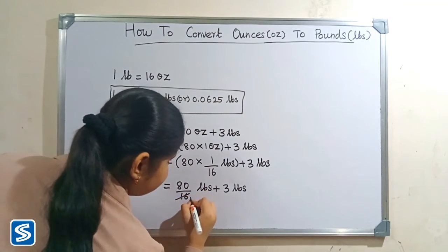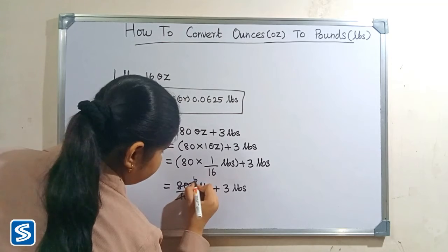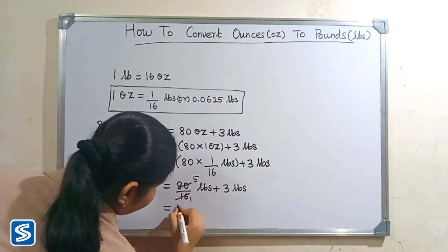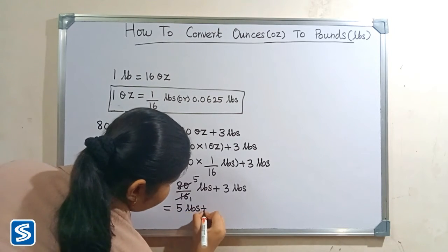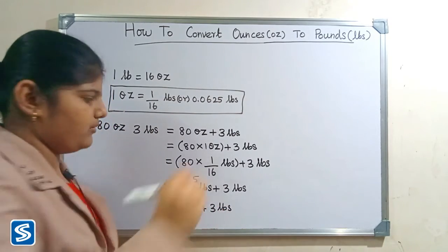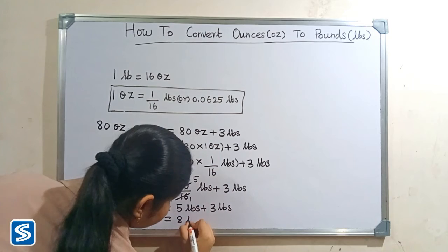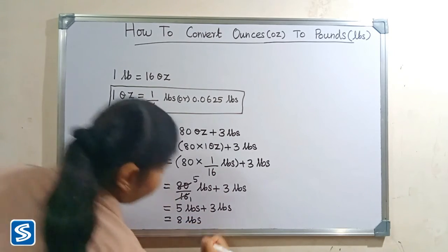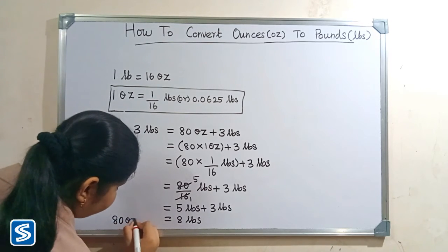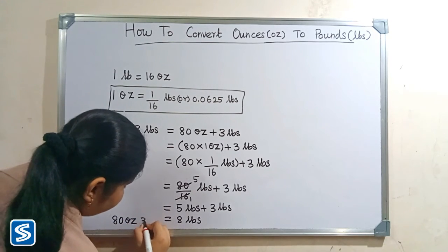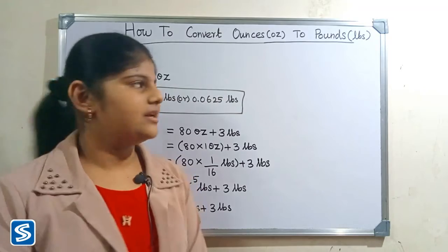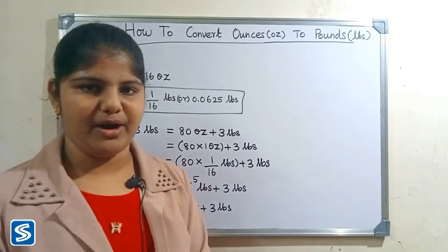So, 16 fives are 80. So, 5 pounds plus 3 pounds. 5 pounds plus 3 pounds will be 8 pounds. So, 80 ounces 3 pounds will be 8 pounds. Hope you friends all understood how to convert ounces into pounds.